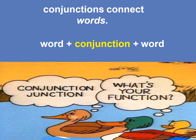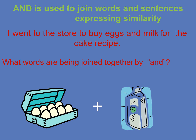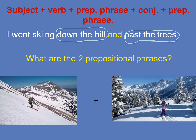Now a conjunction connects words: word plus conjunction plus word. Like, 'My father bought a pencil and an eraser.' The word 'and' is used to join two words — eraser and pencil. So a conjunction is the word which joins two words, two sentences, or two clauses. Now, 'and' is used to join words and sentences expressing similarity. 'I went to the store to buy eggs and milk for the cake recipe.' The words being joined by 'and' are eggs and milk.